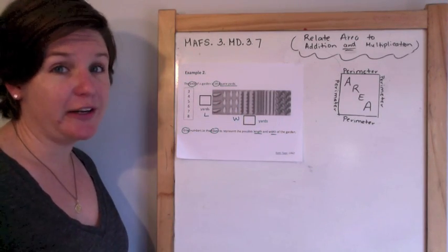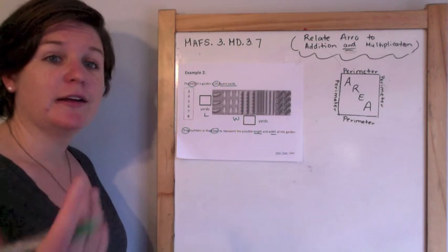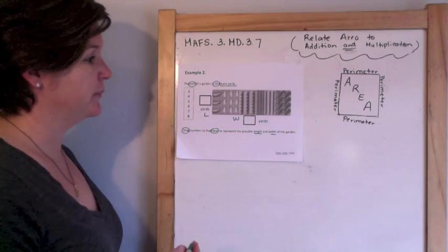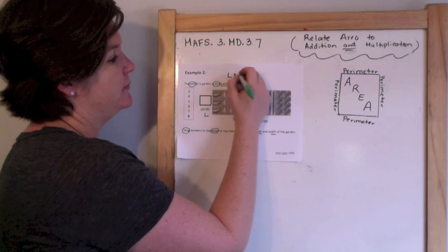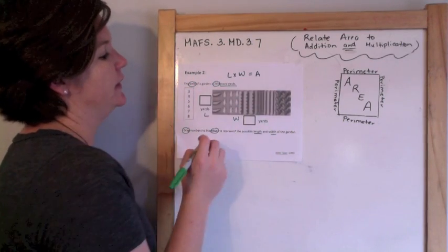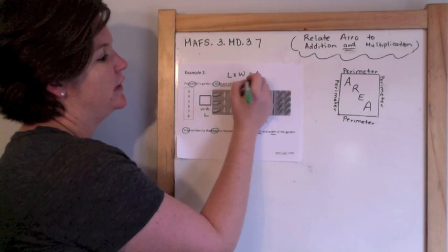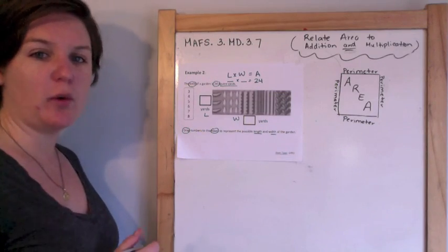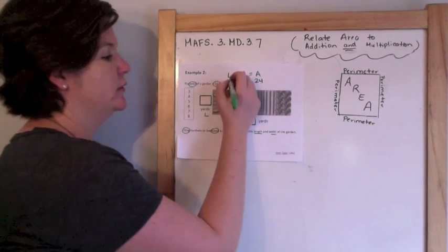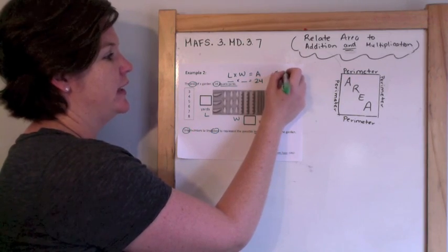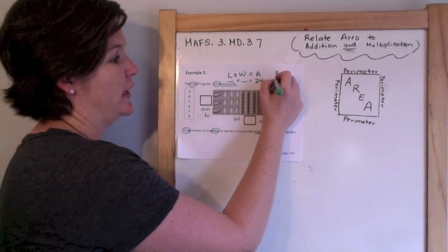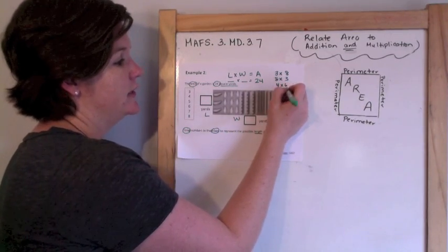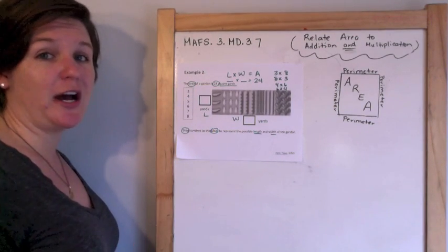For third grade it's a paper-based test, so I'm not sure why they're saying drag — probably because one day it will be a computer-based test. But right now we're going to mimic what it would look like. If we know that length times width equals the area, and the area is 24 square yards, then what times what gives us 24? We could do 3 times 8, 8 times 3, 4 times 6, or 6 times 4. Using these numbers, those are the only options.